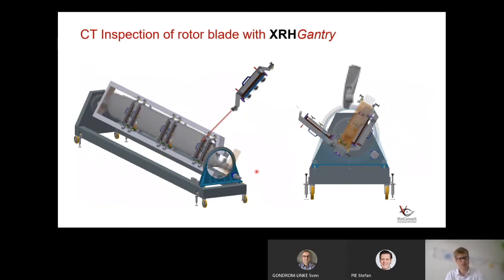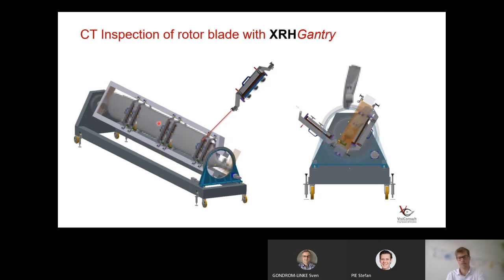For CT of rotor blades, we developed a special part holder — unfortunately we have to pixelate the object again, but it becomes clear. The rotor blade is clamped inside this part holder, and the holding structures can fold away if needed. We can spin the rotor blade within the beam and perform a CT scan of, for example, the root of the rotor blade, and then perform a 2D inspection of the rest of the blade. This has tremendous advantages for customers who need to CT-scan that specific area.